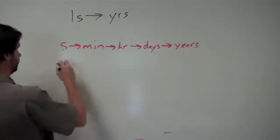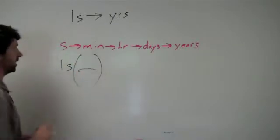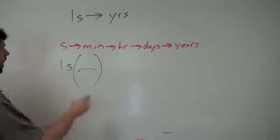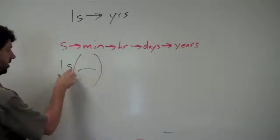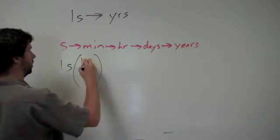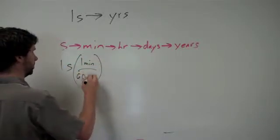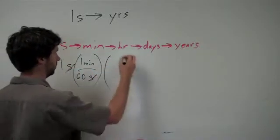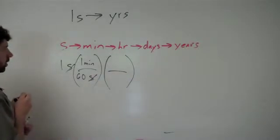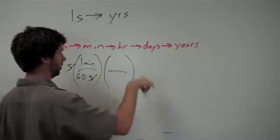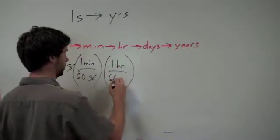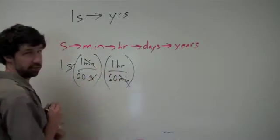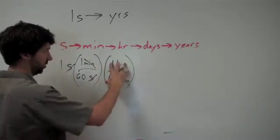We're going to start with one second. Remember, we're going to always multiply by something equaling one, meaning the top and bottom have to be equal values. We've got seconds to minutes, so we want minutes up here and seconds down here so that the seconds cancel out. One minute has 60 seconds — seconds cancel out and right now we'd be at minutes. Then I want to go from minutes to hours. One hour is 60 minutes, and again minutes go on the bottom so they cancel out. One hour and 60 minutes are the same thing, so this equals one.